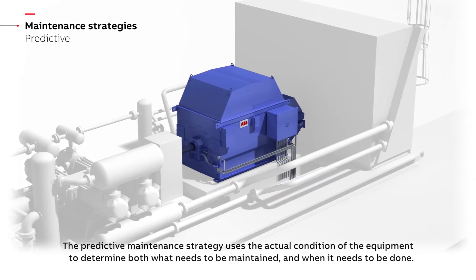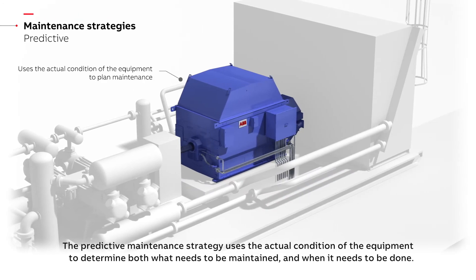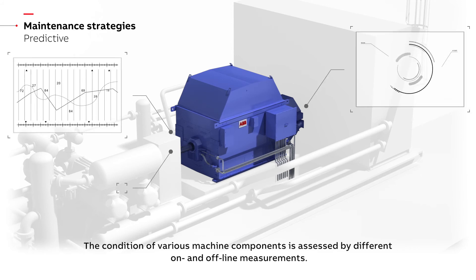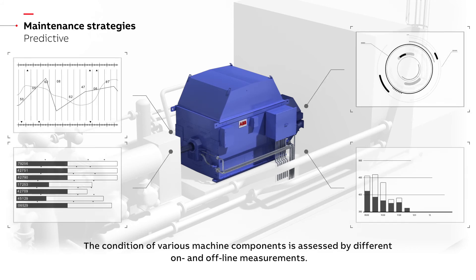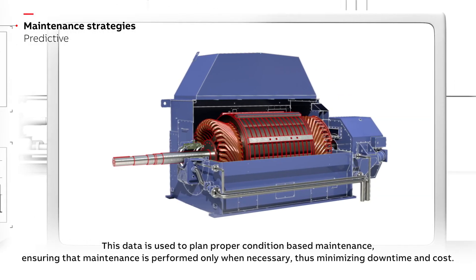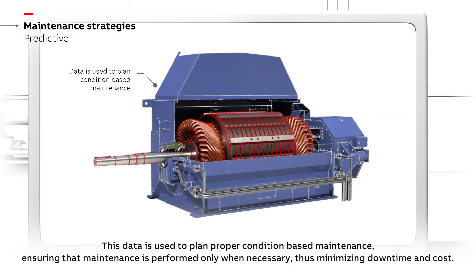The predictive maintenance strategy uses the actual condition of the equipment to determine both what needs to be maintained and when it needs to be done. The condition of various machine components is assessed by different on- and offline measurements. This data is used to plan proper condition-based maintenance, ensuring that maintenance is performed only when necessary, thus minimizing downtime and cost.